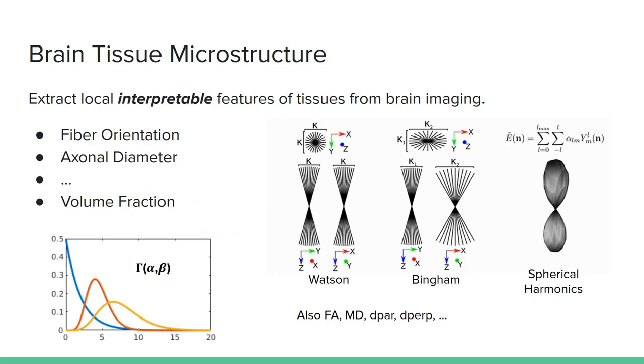When we observe the brain tissue microstructure, what we are looking for is some interpretable feature that carries information about the local composition of the studied matter. For instance, in the white matter we may want to inspect the local orientation or the distribution of the axonal diameters of the fiber bundles. Additionally, it can be interesting to know how much of a specific tissue there is in a specific location. In this case, we will be looking at the volume fraction of each tissue, and this is actually what we are going to look at in this study.